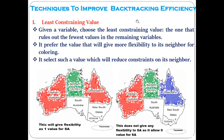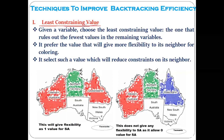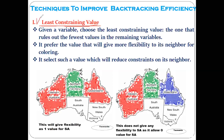The first technique relates to the second question we discussed: which value must you select? This technique is called the Least Constraining Value. First, understand what it means, then we apply it to an example. When given a number of variables, we need to choose the least constraining value — the value that rules out the fewest values in the remaining variables.